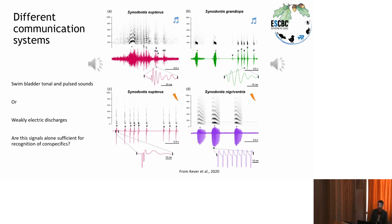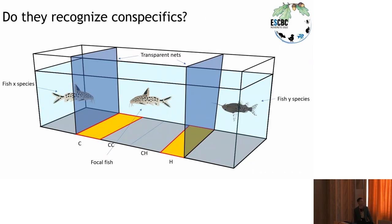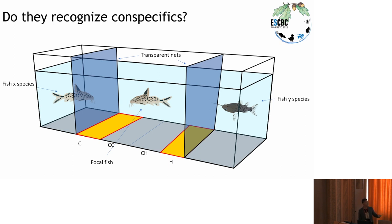To answer this question, I tested my fish in an experimental setup in which I divide an aquarium into three compartments — one with a conspecific, one with a heterospecific, and the center one with my focal fish from one of the three species. I divided this central compartment into four different sectors, recorded the behavior for one hour, and measured the distance the fish moved and the time spent in different sectors. I used the time spent in border sectors to calculate a preference score, to understand if they have species-specific recognition.